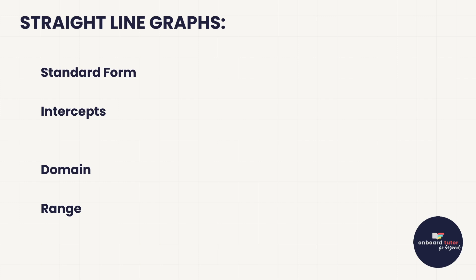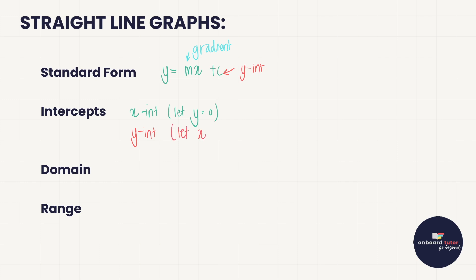Let's look at straight line graphs. The first thing we examine is the standard form of the equation: y = mx + c, where m is the gradient and c is the y-intercept. That leads us to intercepts — how do we get them? You have two types: the x-intercept, found by letting y = 0, because y equals zero wherever the graph crosses the x-axis; and the y-intercept, found by letting x = 0.